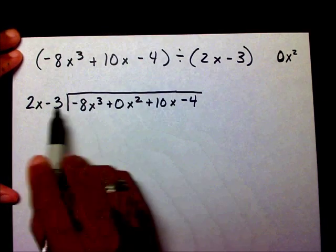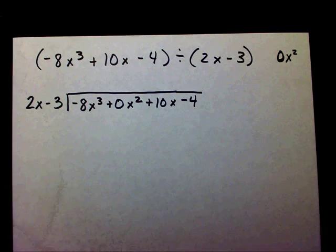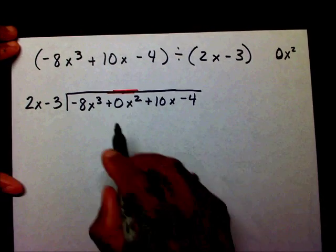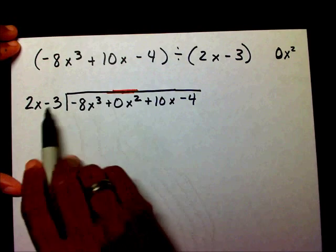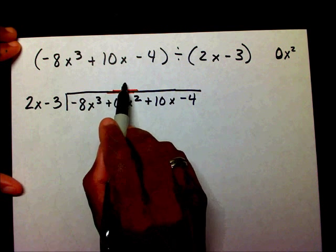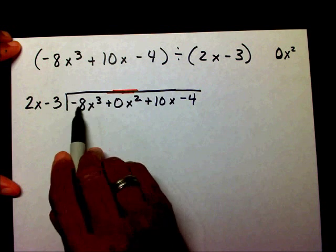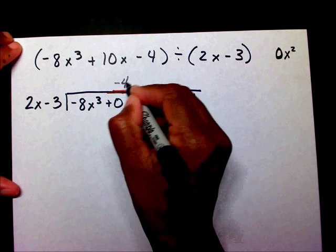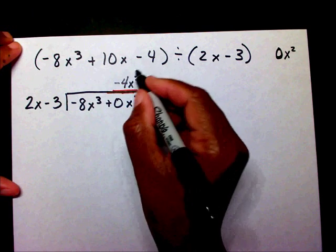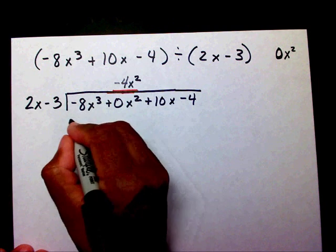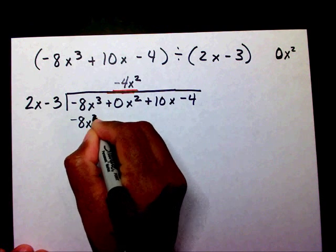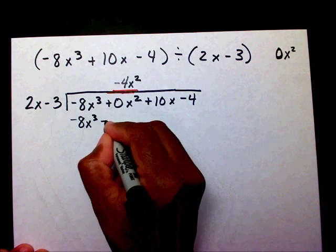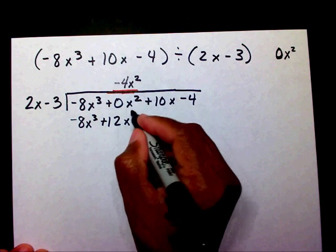This is a binomial, so I'm going to go to the second position of this polynomial — my second term. What number times 2x will give me negative 8x to the third? That's going to be negative 4x squared. Negative 4x squared times 2x is negative 8x to the third. Negative 4x squared times 3 is a positive 12x squared.